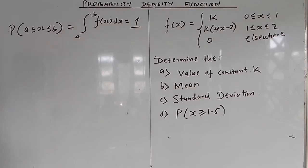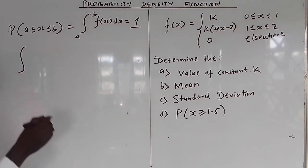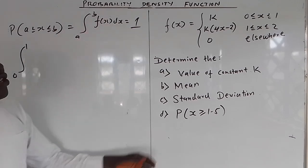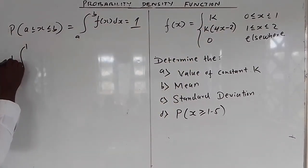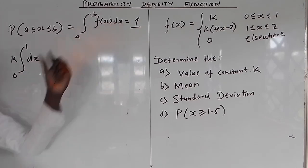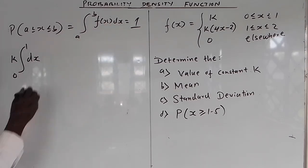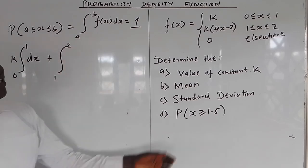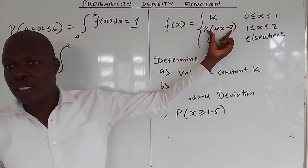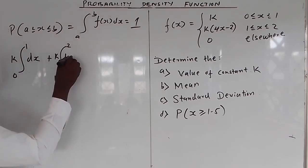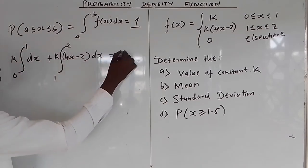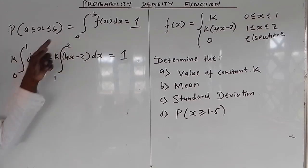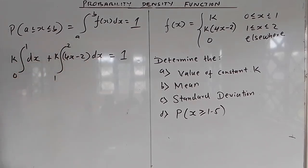From 0 to 2, the function has two different definitions, so you have to separate them. The first part is from 0 to 1, where f(x) = k — k is a constant, so you factor it out and remain with dx. The second part, from 1 to 2, has f(x) = k(4x − 2). You factor k outside, leaving (4x − 2) dx inside.